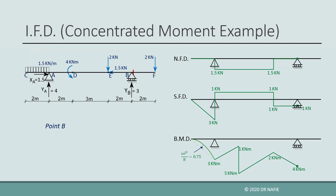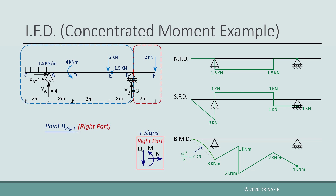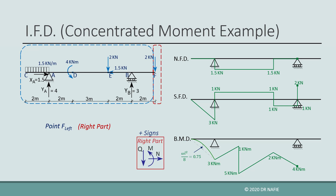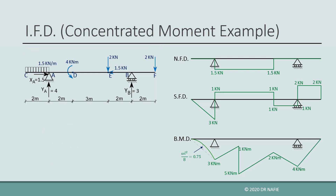We evaluate the internal forces just to the right of point B, again using the right part. The normal force is zero. The right part contains only one vertical force of 2 kN pointing downwards, so the shear force is positive 2 kN. The bending moment is negative 4 kN·m as before. Finally, at the point to the left of point F, the normal force is zero, shear is positive 2 kN, and the bending moment is zero. After connecting all calculated values, the final diagrams are produced.